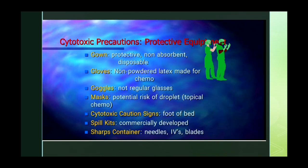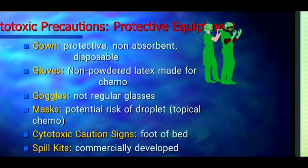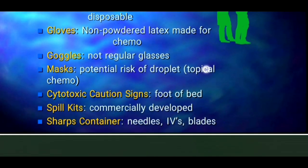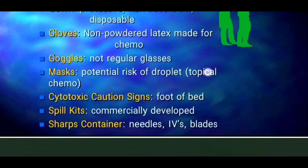This slide shows cytotoxic precautions and protective equipment for use during chemotherapy preparation. Pharmacists and medical personnel must use gown, gloves, goggles, masks, toxic caution signs, spill kits, and specific sharps containers.